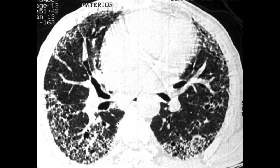This is a full-blown chronic irreversible UIP pattern in a male patient over 50 years. You can safely call it IPF provided you also have the clinical backup. You have bilateral basal honeycombing, architectural distortion mainly in the lower lobes. So this is a typical chronic stage of IPF.